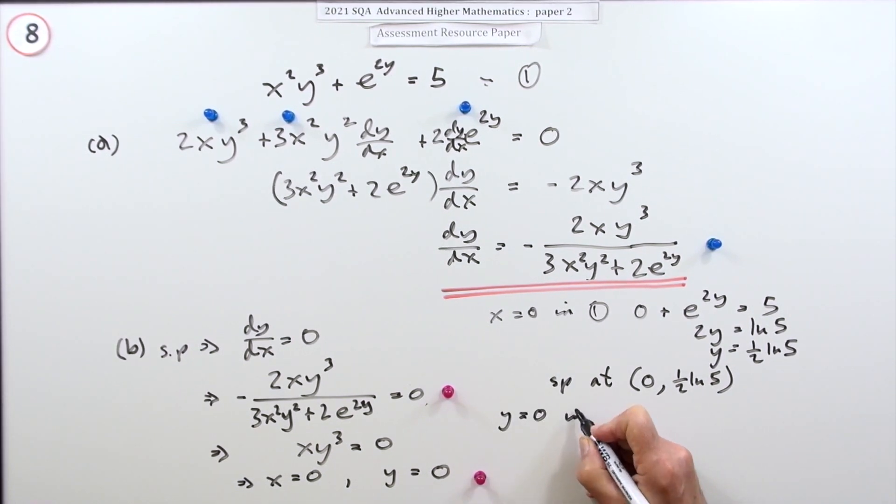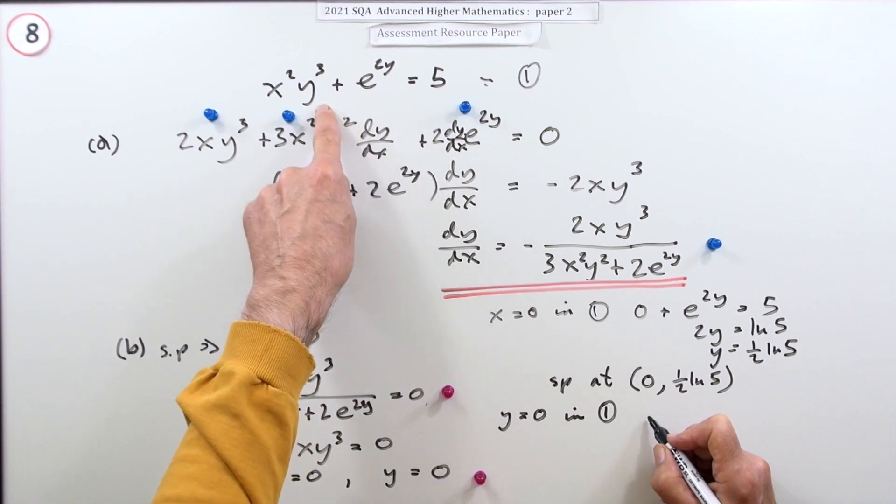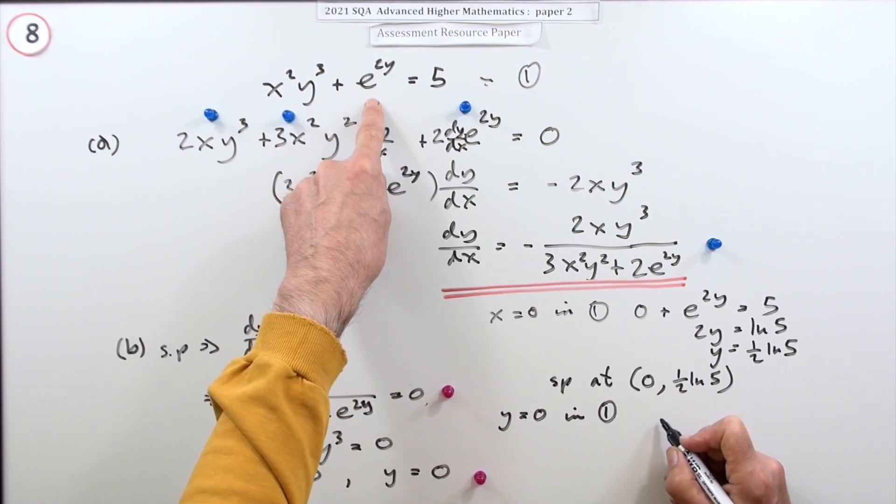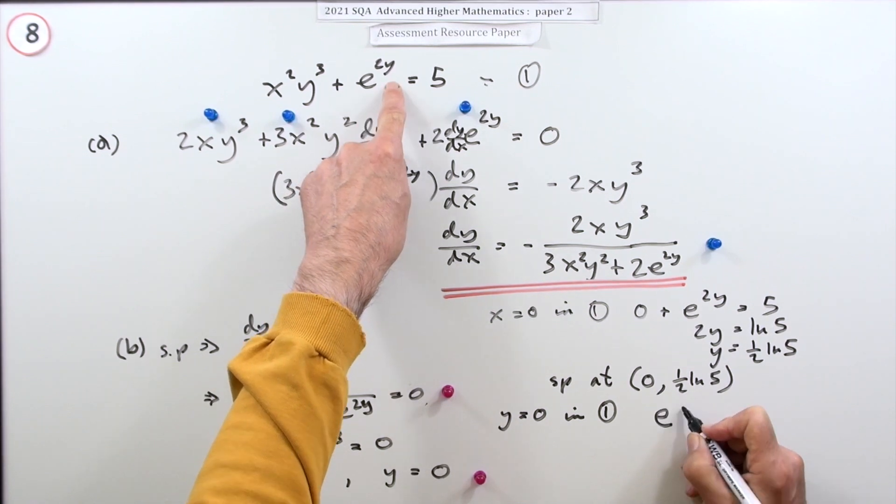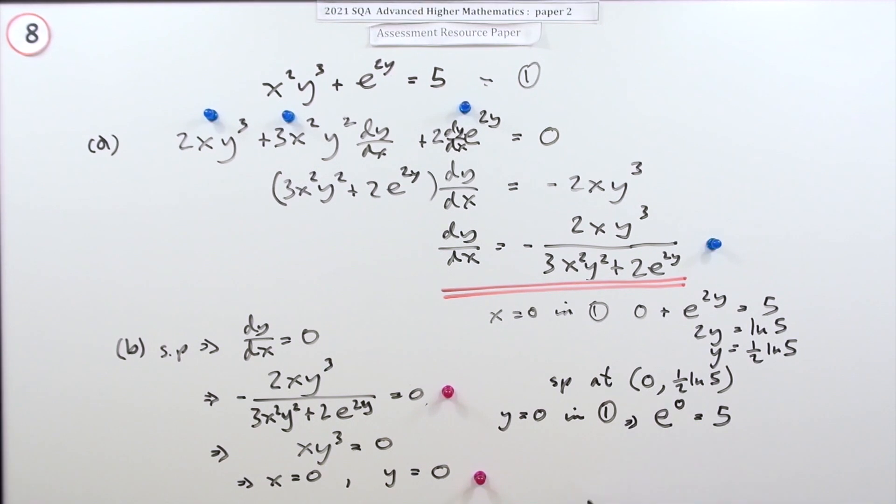So if you put y equals zero in equation one, that term disappears and you end up with e^0 = 5. You can't have that because e^0 = 1.